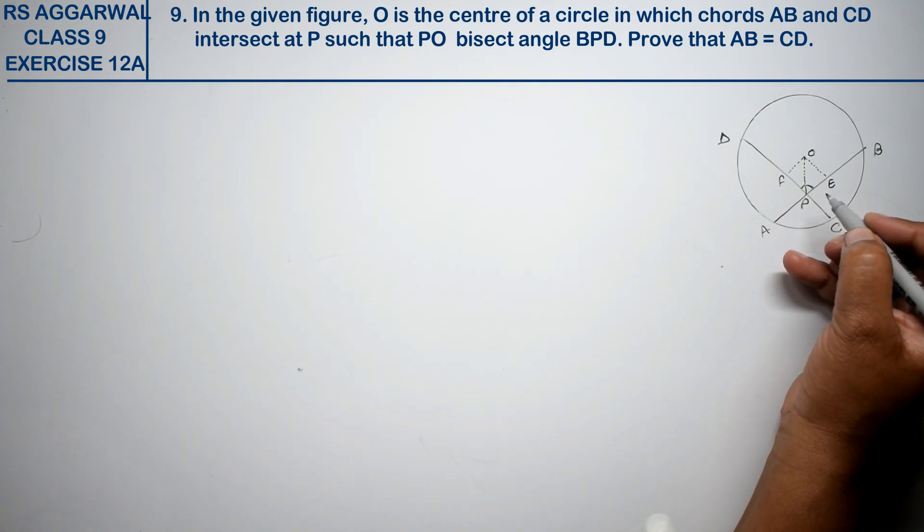Prove that AB equals CD. We have to prove AB equals CD. How shall we do it?